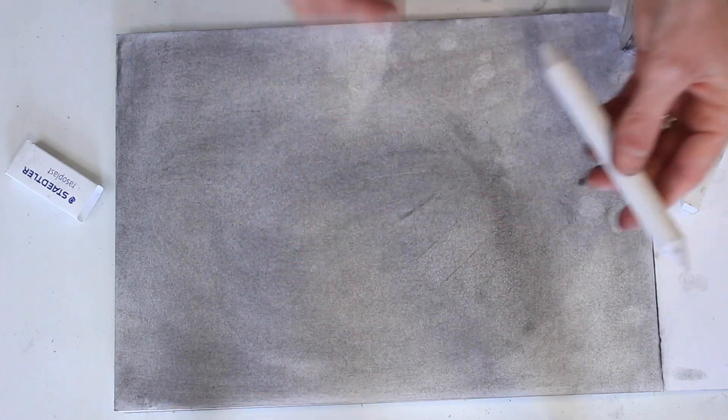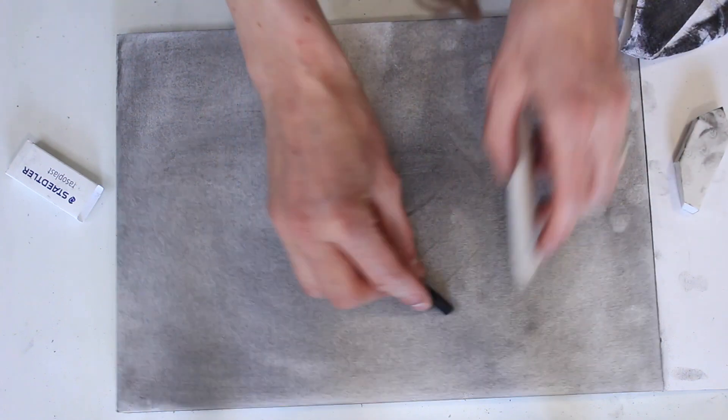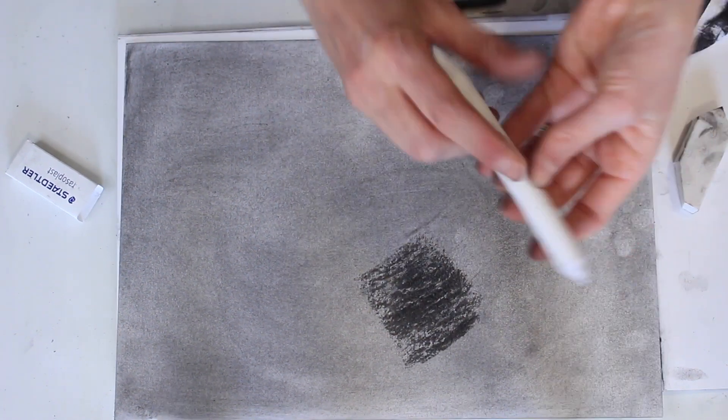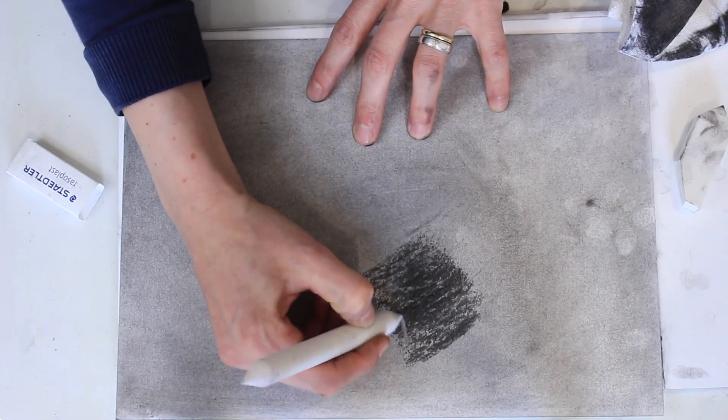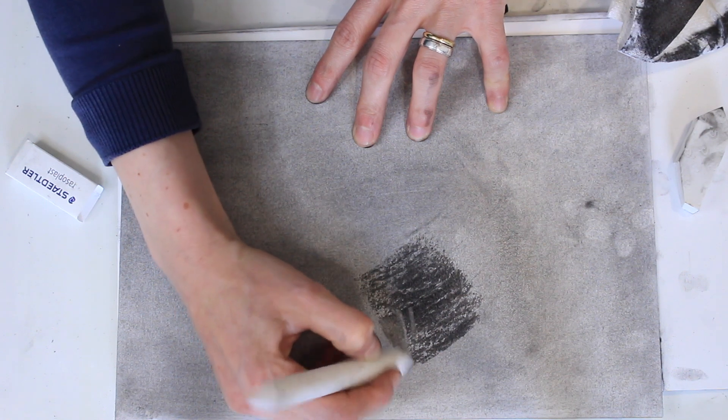And the next blending tool we have is a blending stick, which does a similar thing to the tissue and paintbrush, but as you can imagine, it's shaped like a pencil so it's a little bit easier to control. It helps you get small details correct.